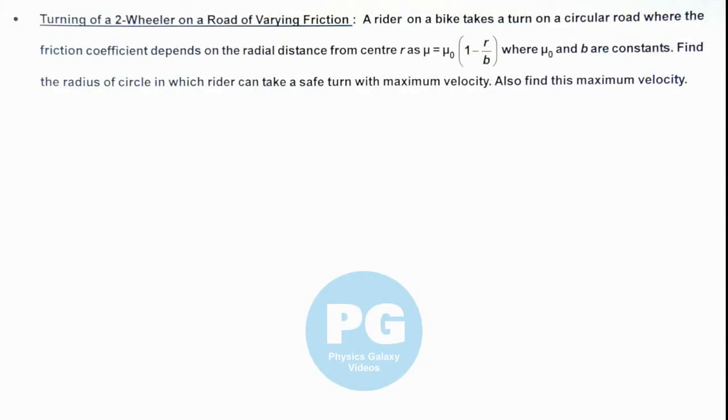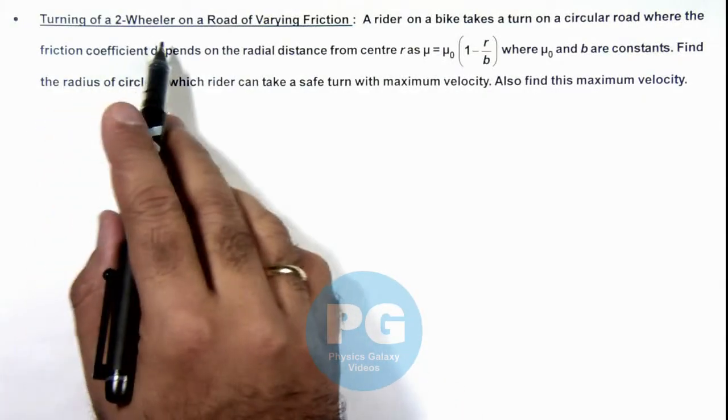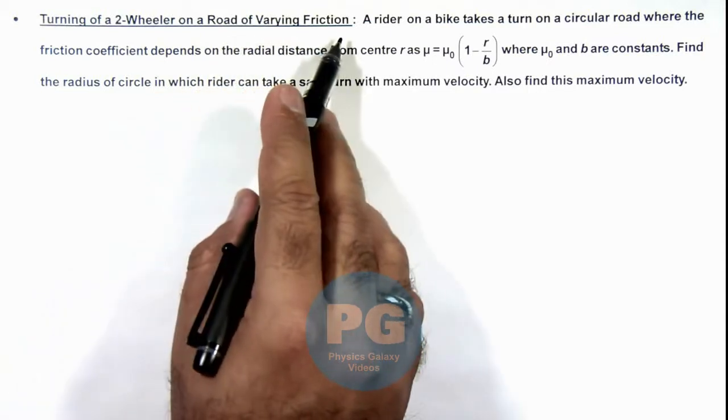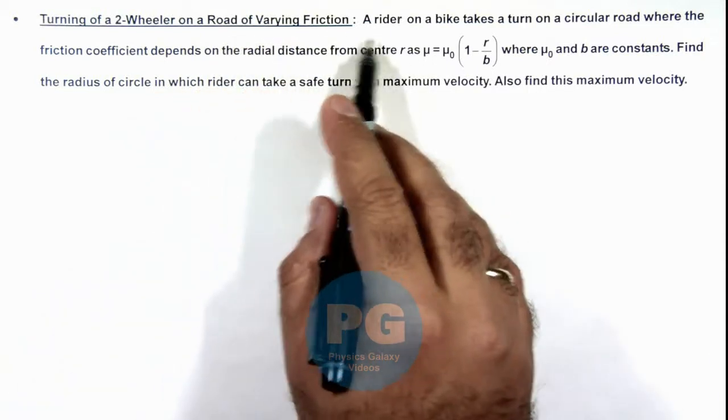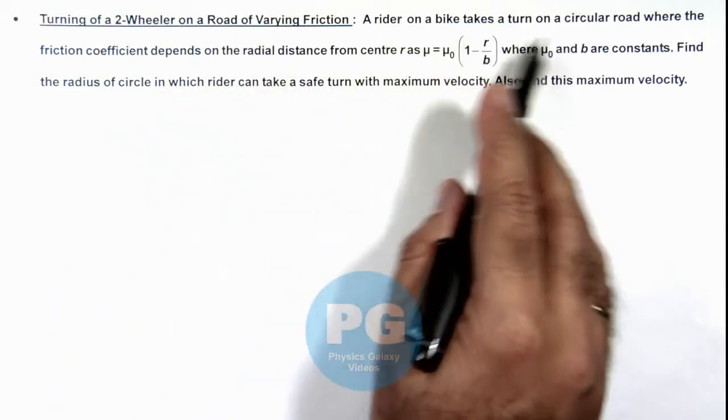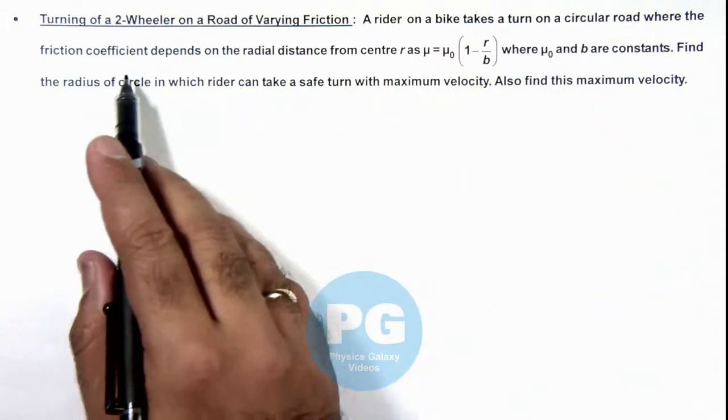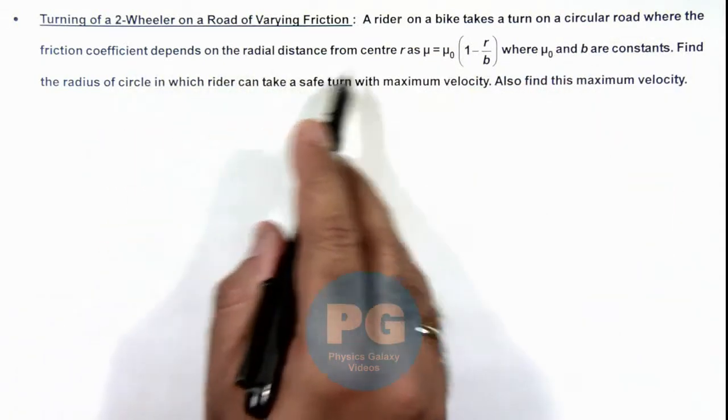In this illustration, we'll discuss turning of a 2-wheeler on a road of varying friction. Here we are given that a rider on a bike takes a turn on a circular road where the friction coefficient depends on the radial distance from